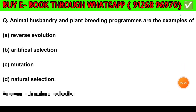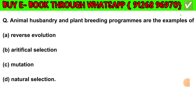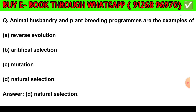Question number 2. Animal husbandry and plant breeding programs are examples of: Option A — Reverse evolution. Option B — Artificial selection. Option C — Mutation. Option D — Natural selection. The answer is Option D: Natural selection.